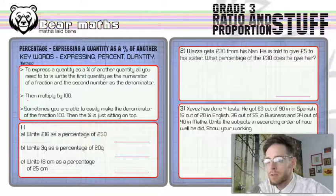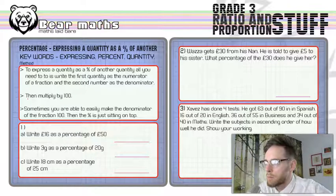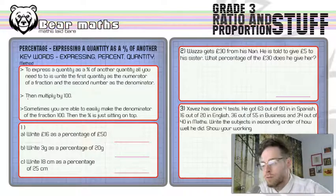So the keywords I've got for you are expressing, percent, and quantity. If you're expressing something, you're writing it in a particular way. Percent means out of 100, per means out of, and cent means 100, and quantity is an amount of something.